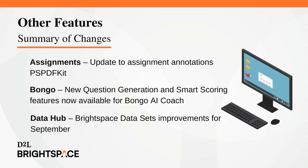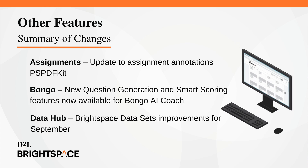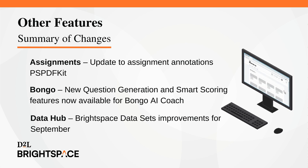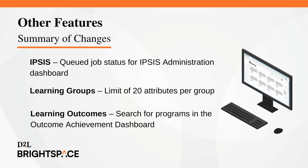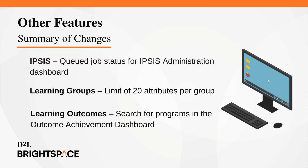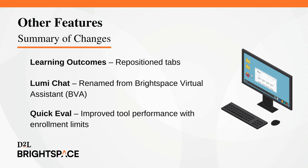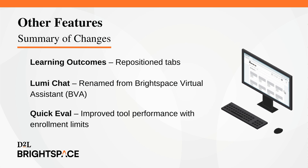Let's take a quick look at the other features for this month's release: an update to Assignment Annotations PSPDFKit in Assignments; new question generation and smart scoring features now available for Bongo AI Coach; Brightspace data set improvements for September in DataHub; Queue Job Status for Ipsis Administration Dashboard; a limit of 20 attributes per group in Learning Groups; search for programs in the Outcome Achievement Dashboard with Learning Outcomes; Learning Outcomes also features repositioned tabs for a better user experience; Brightspace Virtual Assistant has been renamed to LumiChat; and improved tool performance with enrollment limits in Quick Eval.